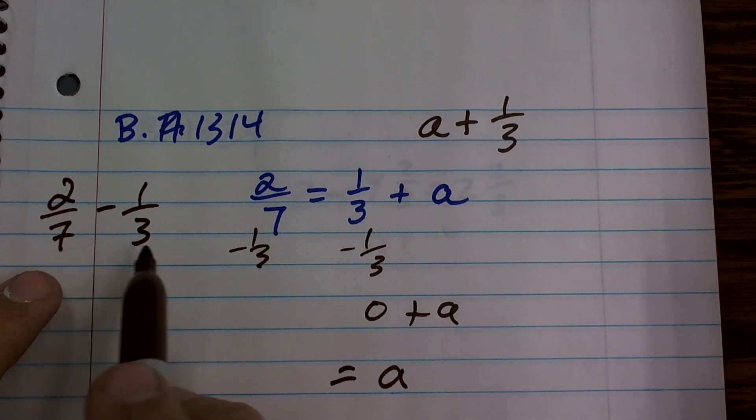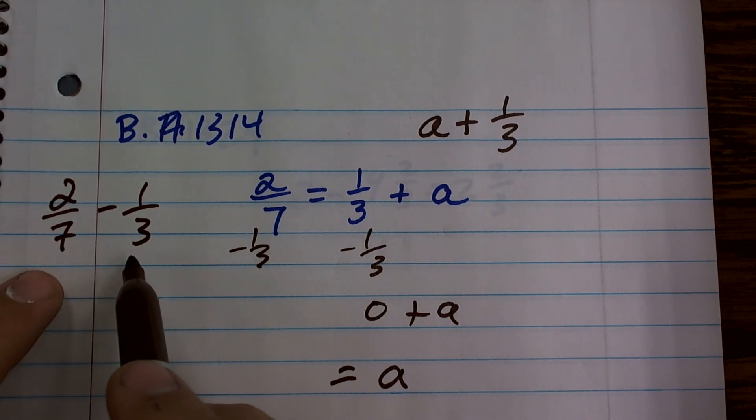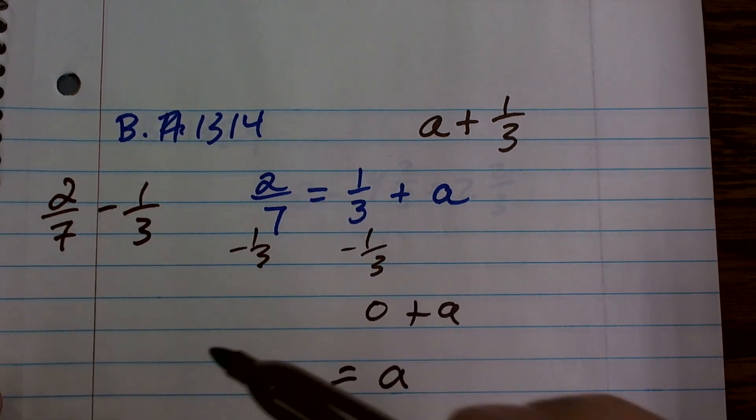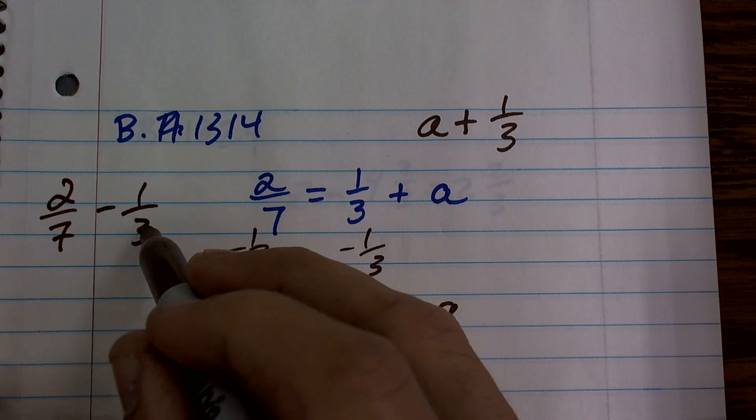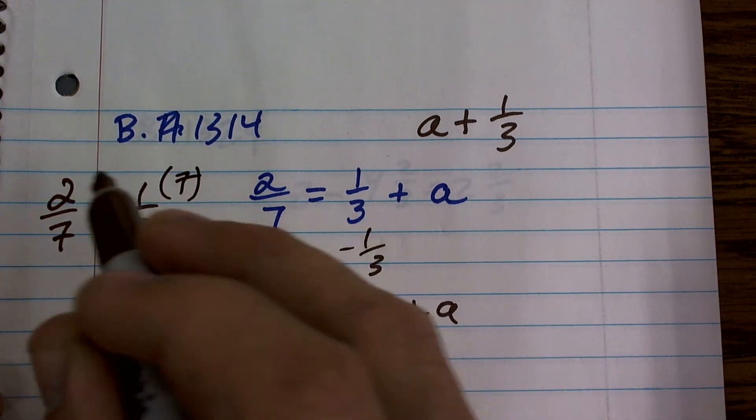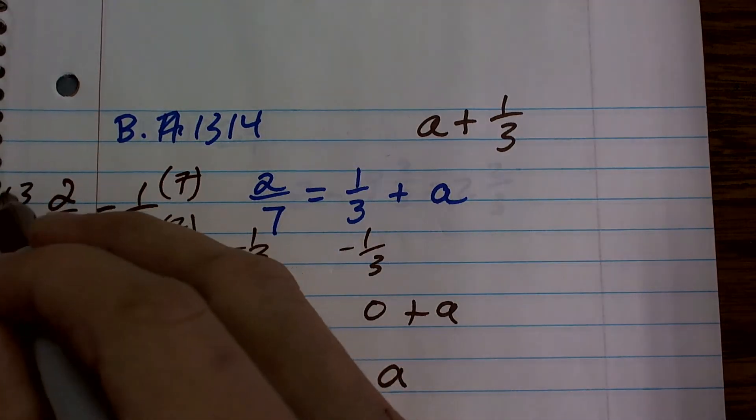So what is the least common multiple of 7 and 3? That's going to be 21. So to get to 21 from 3, I need to multiply by 7/7, and to get this to be 21, I need to multiply by 3.